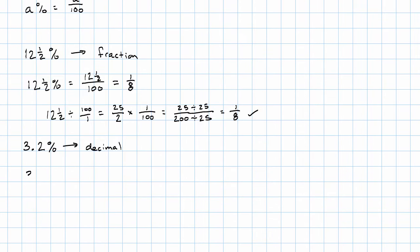Well, 3.2% is 3.2 over 100. I'm just taking 3.2 divided by 100, so I'm going to be moving the decimal point two places to the left.